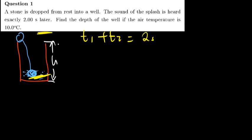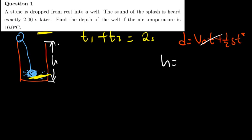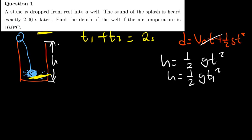The stone started from rest, so the initial velocity is 0. Using the kinematic equation D = V_initial·T + ½GT², since the initial velocity is 0 this simplifies to H = ½GT1². Since I don't have H and I don't have T1, I'll call this Equation 1.